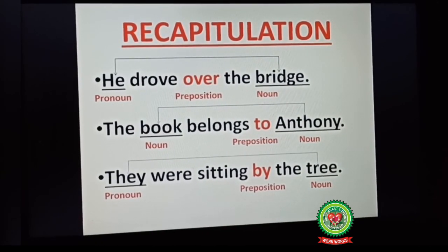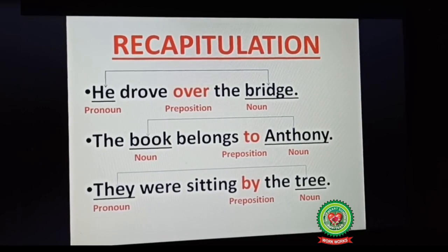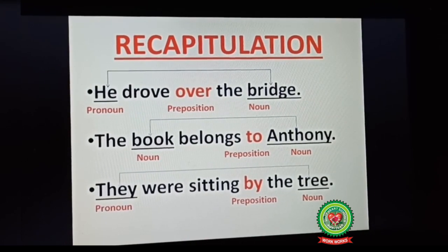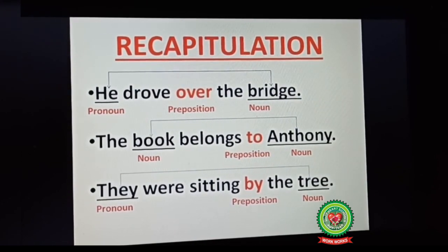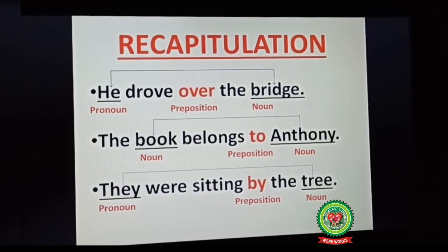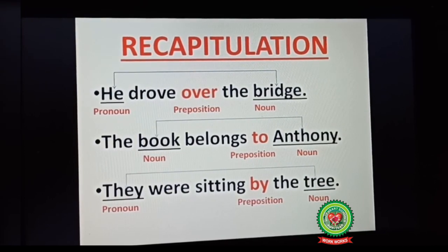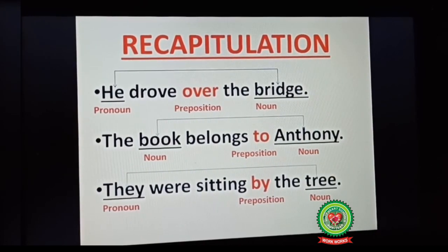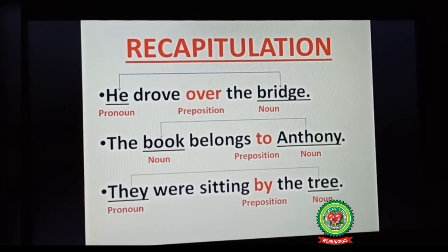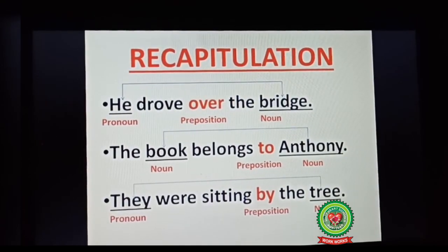When we add prepositions to these sentences, it looks like this. First: 'He dropped over the bridge.' Here, 'over' shows a relationship of pronoun 'he' with noun 'bridge,' so 'over' is a preposition. 'The book belongs to Anthony' — here 'to' shows relationship of noun 'book' with noun 'Anthony,' so 'to' is a preposition. Third: 'They were sitting by the tree' — 'by' indicates the relationship of pronoun 'they' with the noun 'tree,' so 'by' is your preposition. A preposition is a word that tells you the position or indicates the relationship of one part of speech with the other.